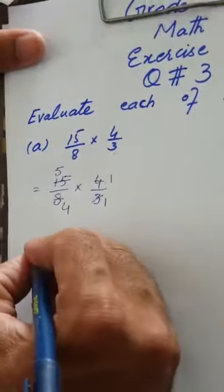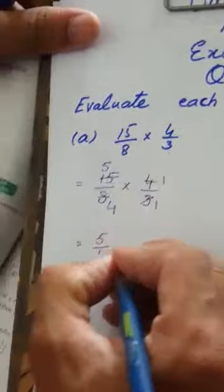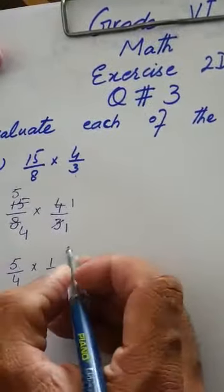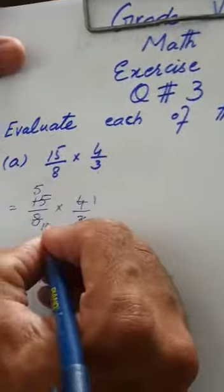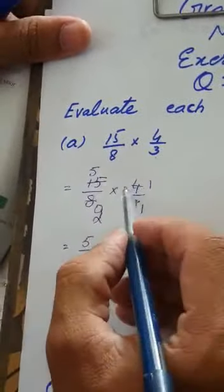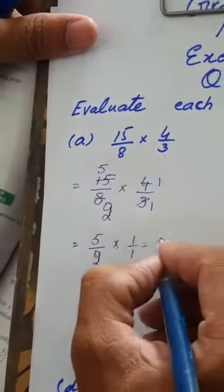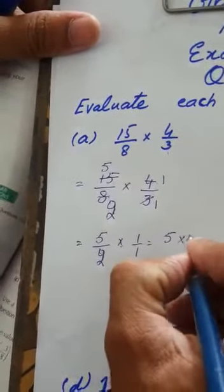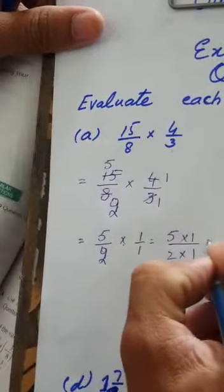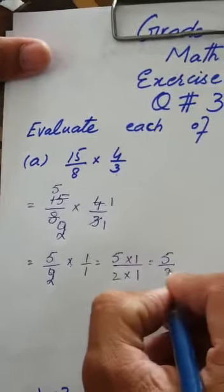3 fives are 15, and 4 twos are 8. After cancellation we are left with 5 over 2 multiplied by 1 over 1. So 5 multiplied by 1 over 2 multiplied by 1 gives us 5 over 2, which is our answer.